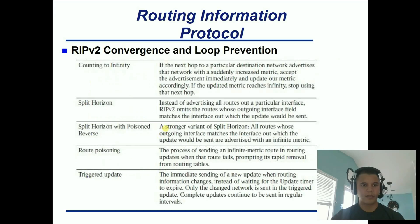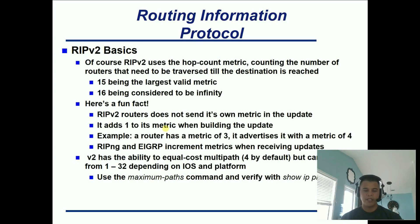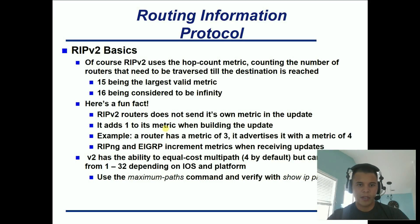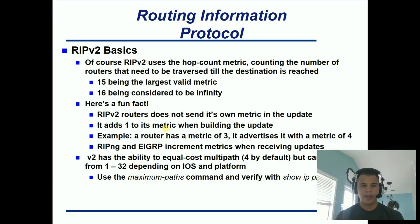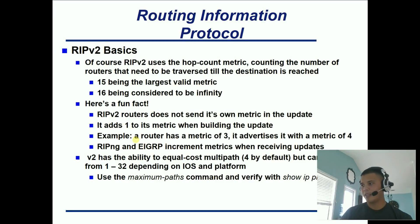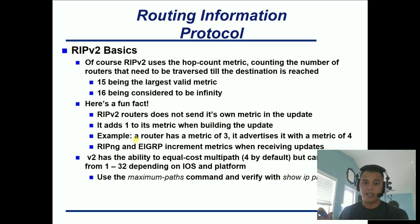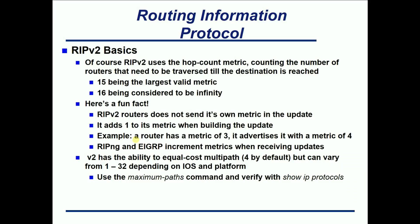RIP version 2 uses the hop count metric, with 15 being the largest usable and 16 considered infinity, incrementing by one as you go through each router. Interestingly, RIP version 2 routers don't send their own metric in the update — so if my metric to a destination is 3, I'm not going to send 3 and have my neighbor add 1 to make 4; I will do that for them. So I have a metric of 3, and as I build my update I'm going to send it out with a 4. RIPNG and EIGRP do not do that — they send whatever their metric is and it's up to the neighbor to figure out the full metric.